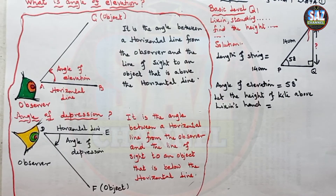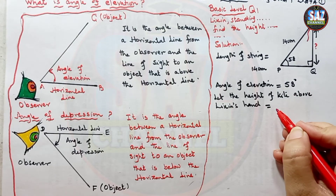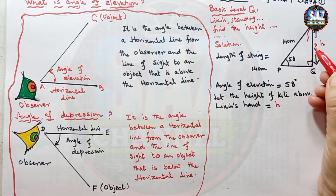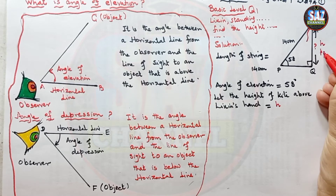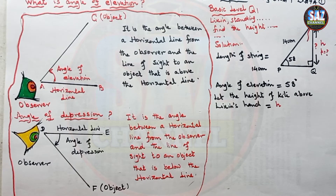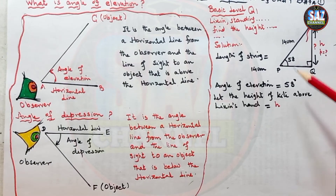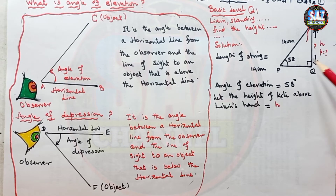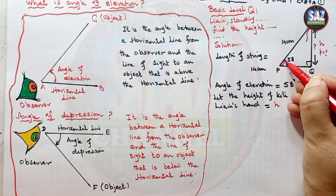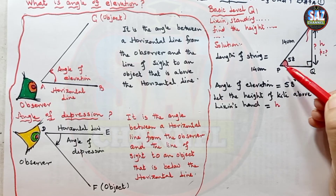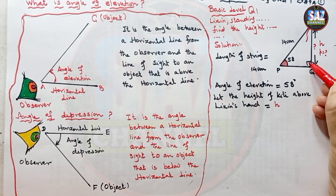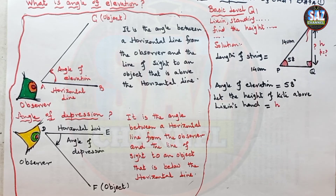We must suppose some letter for this unknown height. I can use H, or since this is a side in the triangle at P, you can use P — it's up to you what letters you are using. As this is a right-angle triangle, one angle and one length are given. The angle of interest is 58 degrees, and we have to decide what H and 140 meters represent with reference to this angle.